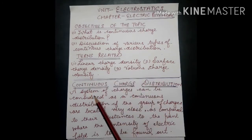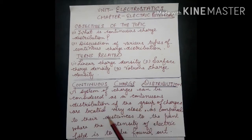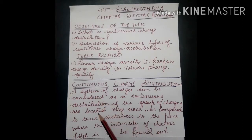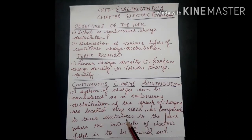A system of charges can be considered as a continuous charge distribution if the group of charges are located very close to each other compared to their distance from the point where the electric field intensity is to be found. When charges are very close to each other, we use continuous charge distribution. When charges are very far away, they are considered as discrete charges, because discrete charges can simply be added.